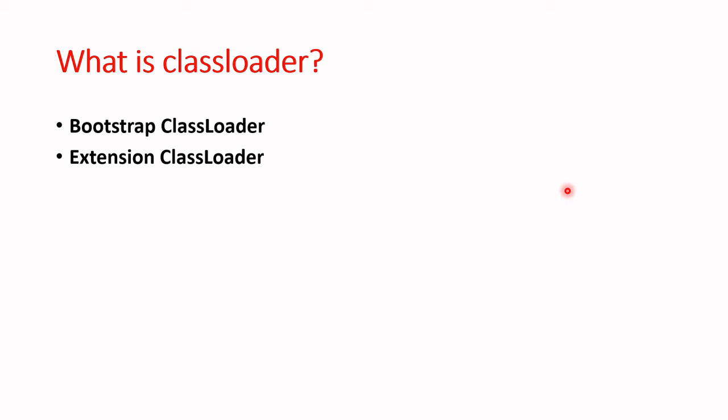Java provides the rt.jar file that contains all the Java packages, like java.lang, java.net, java.io, java.sql, and other utility packages — there are 14 packages in the rt.jar file. If you have already installed Java, go to the JRE and search for rt.jar, unzip it, and you will see those 14 packages. The Bootstrap Class Loader loads the rt.jar file and verifies all the code you have written based on it.